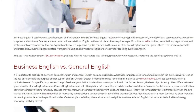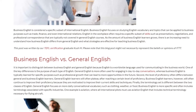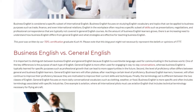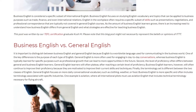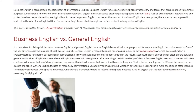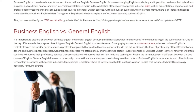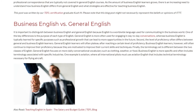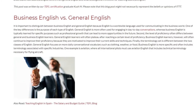One of the key differences is the purpose of each type of English. General English is more often used for engaging in day-to-day conversations, whereas Business English is typically learned for specific purposes such as professional growth that can lead to more opportunities in the future. Second, the level of proficiency often differs between General and Business English learners. General English learners will often plateau after reaching a certain level of proficiency. Business English learners, however, will often continue to improve their proficiency because they are motivated to improve their current skills and techniques.